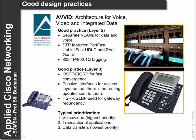For good design practices at layer 2, it is good practice to create separate VLANs for data and voice — they are kept within the same broadcast domain and can be switched. STP features should include PortFast, UplinkFast and Root Guard to protect against STP attacks. We should also use some form of tagging in order to define the quality of service.